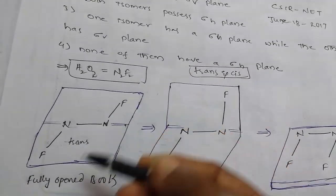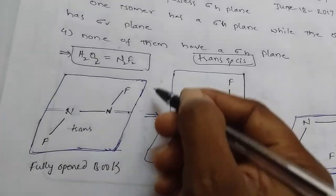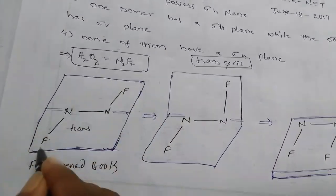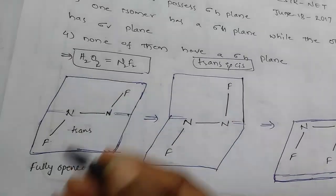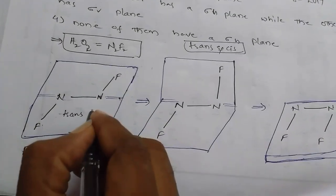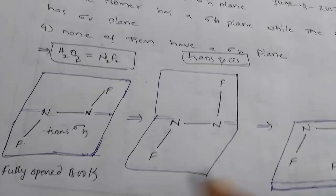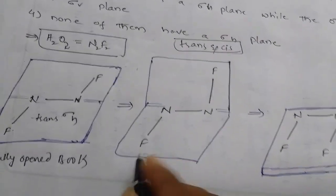Fully open book-like structure. In this book, we have sigma H plane. Fully open, so that's why consider this is a plane through the molecule. So that's why it has sigma H plane.